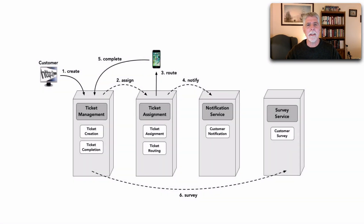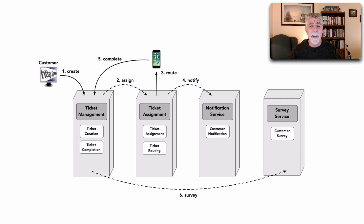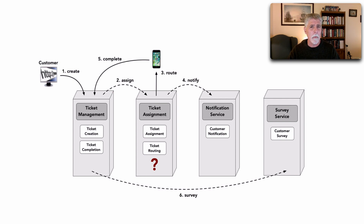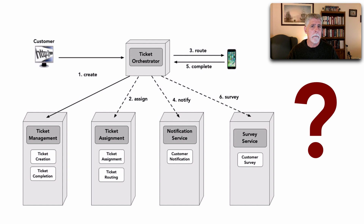Throughout my career as an architect I've been making a lot of diagrams and working with a lot of companies, which led to my third big lesson learned. I would draw diagrams — you could see how a ticket is created, assigned, routed, notified, completed, and a customer survey issued. But people would start to ask me: why did you create only one service for assignment and routing? Why not split those into two? Why is the completion a synchronous call whereas assign, notify, and survey are asynchronous? Why choreography instead of orchestration? My epiphany — when the light bulb went off — was really so powerful.